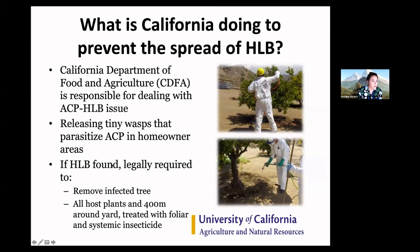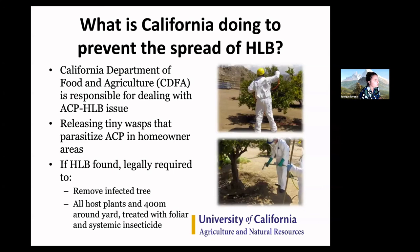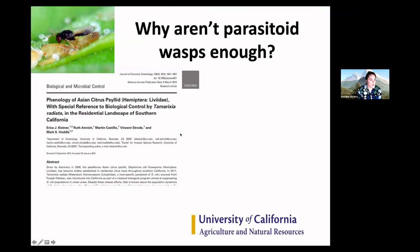What is California doing to prevent the spread of HLB? Most of the action is happening in backyards in LA and Orange County where there is active spread. CDFA, the California Department of Food and Agriculture, is responsible for dealing with the ACP-HLB issue. Generally speaking in those areas, they're releasing a tiny wasp that can parasitize Asian citrus psyllid. If HLB is found, legal actions take place — they have to remove the infected tree, and there's a 400-meter delimitation treatment zone around that property where all citrus plants are treated with a foliar and a systemic insecticide.